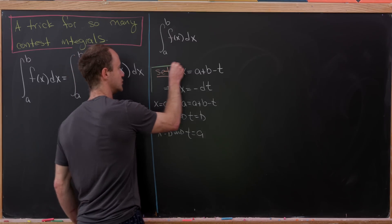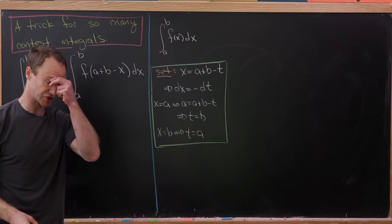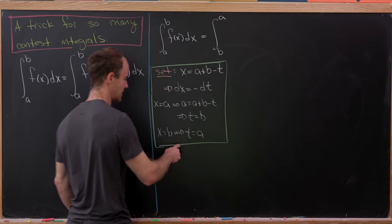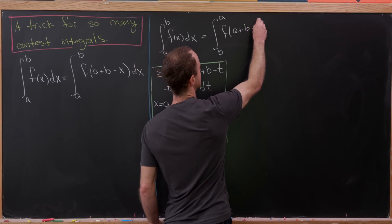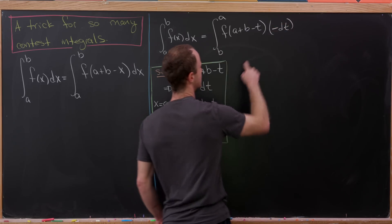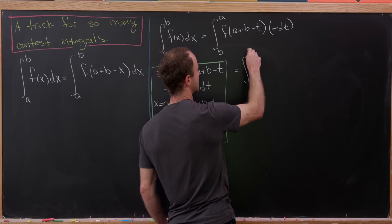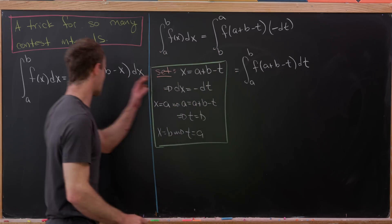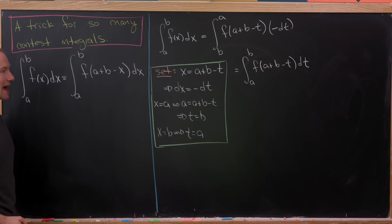We've made our substitution for the variable, the differential component, and the bounds of integration. Rewriting the integral, we get the integral from b to a of f(a + b − t) times (−dt). Taking the minus sign and switching the order of the bounds leaves us with the integral from a to b of f(a + b − t) dt — which is exactly what we had, just with the dummy variable x replaced by t. That establishes the rule.